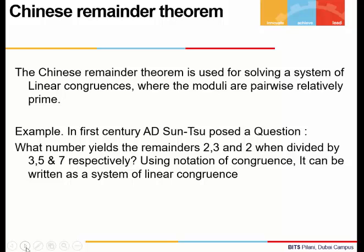Using the notation of congruence, if we write the model of this problem, we will get a system of linear congruence: x ≡ 2 (mod 3), x ≡ 3 (mod 5), and x ≡ 2 (mod 7).